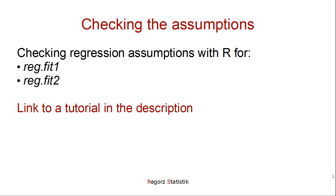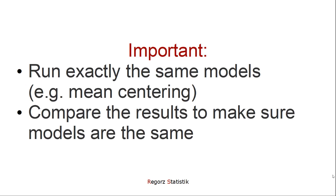If you want to know how to check the regression assumptions in R, there's a link to a tutorial about that in the description of this video. Importantly, you have to run exactly the same models in R which you have been running in PROCESS. For instance, if you use mean centering in PROCESS, you should mean center in R. To verify this, I would compare the results from PROCESS and from the replicated models in R, and make sure that the results are the same.